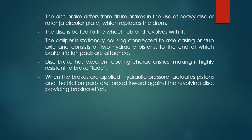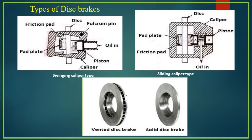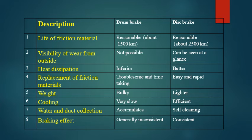The disc brake differs from the drum brake in using a heavy disc. The disc is bolted to the wheel hub and revolves with it. The caliper is a stationary housing connected to the axle casing, consisting of two hydraulic pistons at the ends of which brake friction pads are attached. Disc brakes have excellent cooling characteristics, making them highly resistant to brake fade. When the brakes are applied, hydraulic pressure activates the pistons and the friction pads are forced inward against the revolving disc. Types include swinging caliper and sliding caliper, as well as vented disc and solid disc brakes.